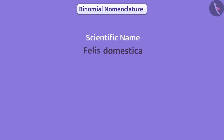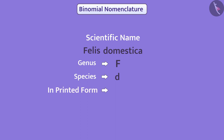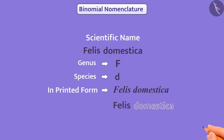When writing scientific names, we need to keep some rules in mind. The genus name must start with an uppercase letter of the English alphabet, and the species name must start with a lowercase letter. In printed form, scientific names are written in italics, but when written by hand, both the genus and the species are underlined separately.